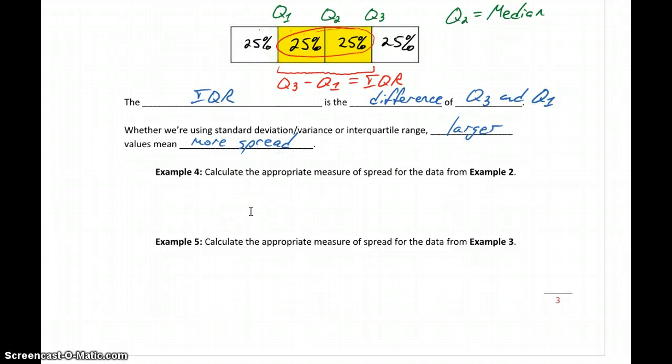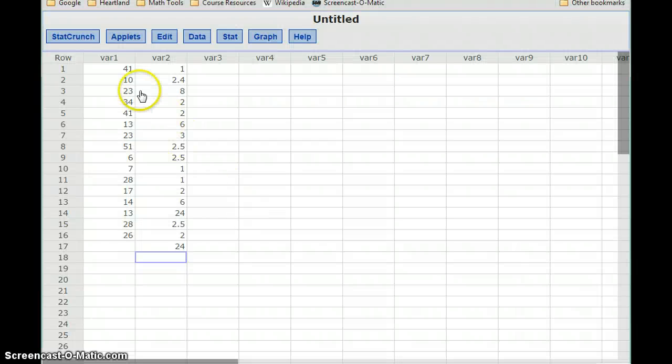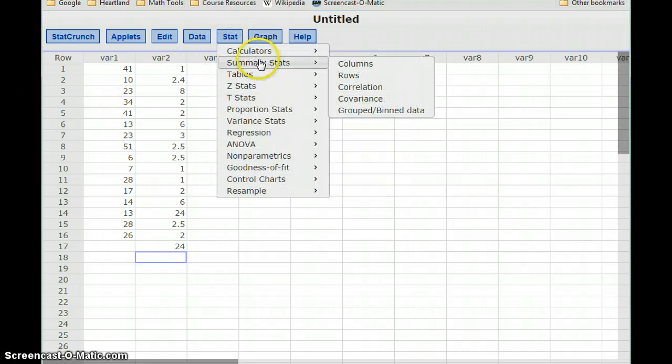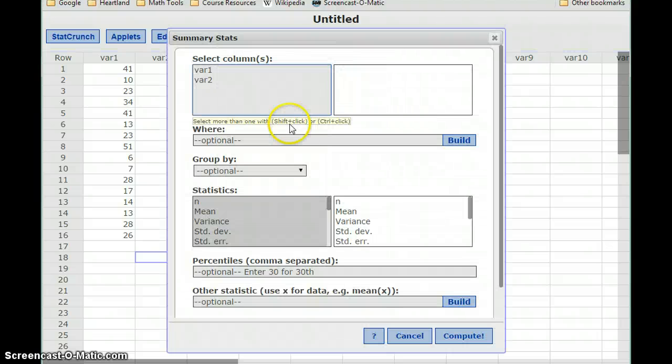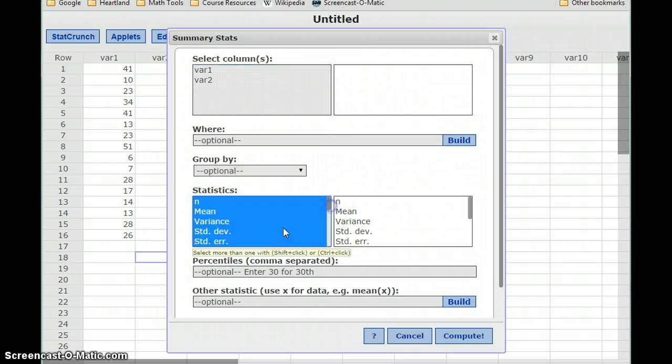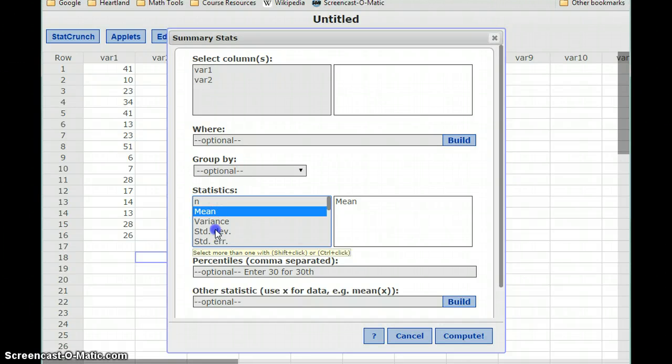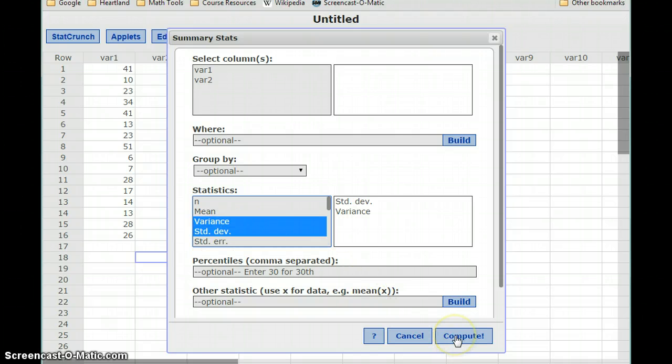In our next two examples, what we want to do now is calculate the appropriate measure of spread for each of the previous two examples we already looked at. So in example two, we were looking at the data from the Bears points per game. So in variable one here, we already decided that this data was moderately skewed. We could use the mean as the appropriate measure of center. So if we go to Stat, Summary Stats, and then Columns, since we use the mean as our measure of center, we can look at the standard deviation as our measure of spread, and we'll go ahead and calculate the variance as well, just to see that relationship between these two.